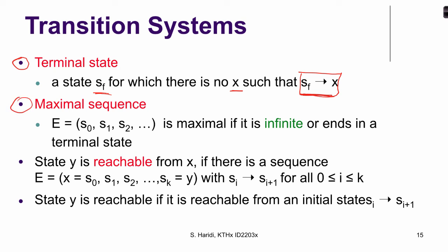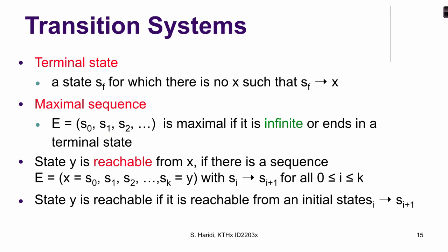A maximal sequence is an execution that is either infinite or ends in a terminal state. We also have the intuitive notion of reachability: a state y is reachable from a state x if there is a sequence starting at x and ending at y where all movements are legal according to the transition relation. We say that y is reachable if it is reachable from any initial state.